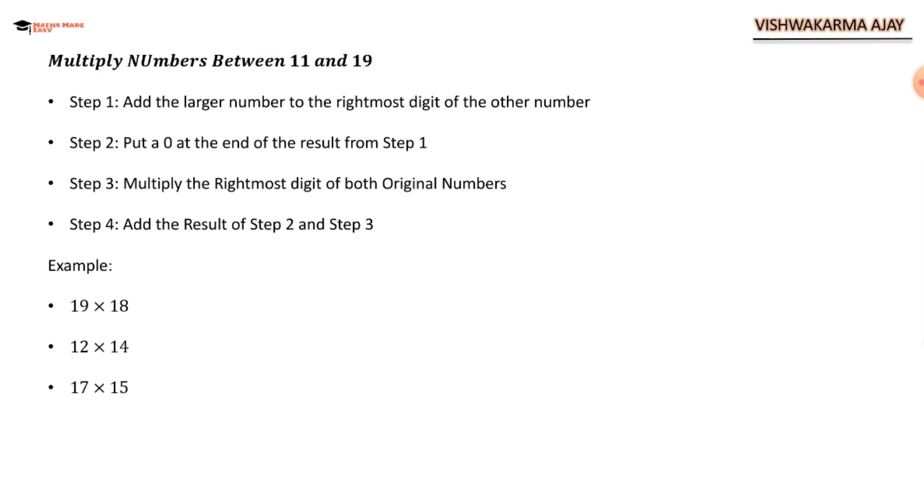Step 1: Add the larger number to the rightmost digit of the other number. Step 2: Put a 0 at the end of the result from Step 1. Step 3: Multiply the rightmost digit of both the original numbers. Step 4: Add the result of Step 2 and Step 3.